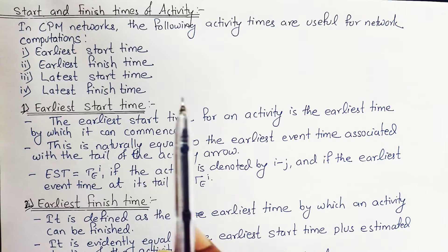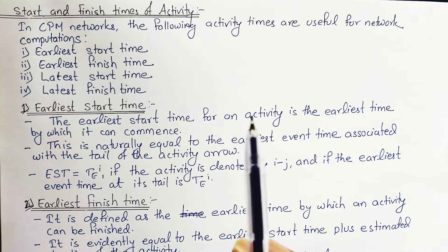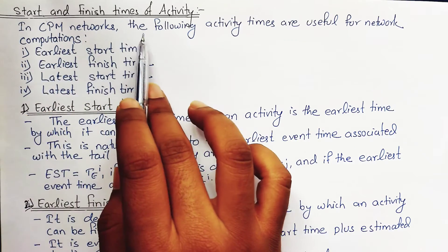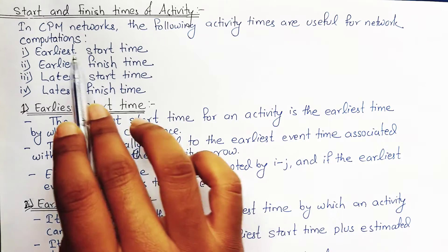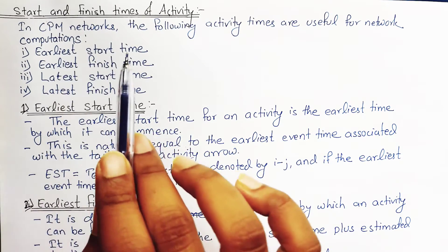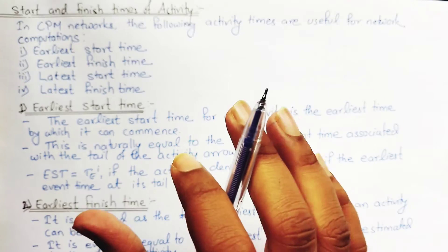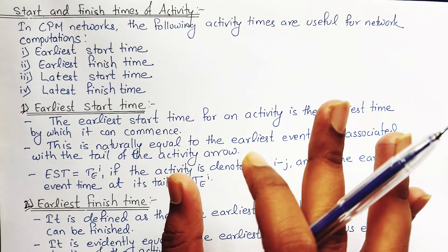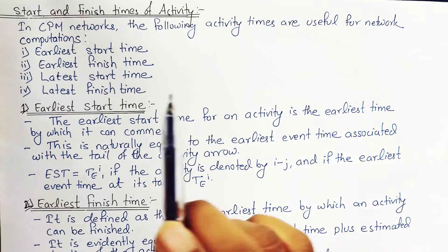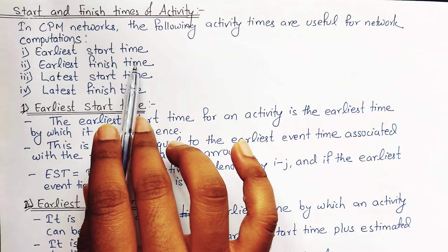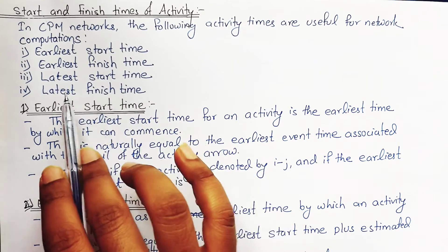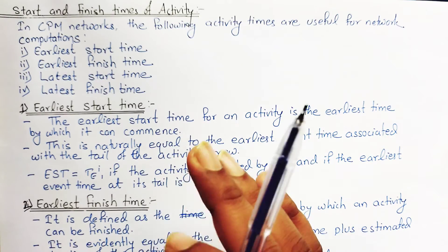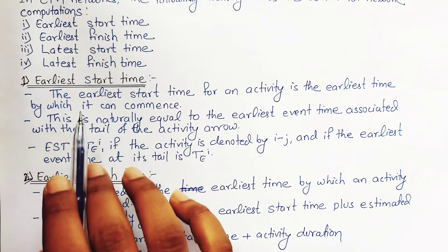One must always know about different start and finish times of activities, which are mainly used in CPM network computation. The four time estimates useful for CPM network computation are: Earliest Start Time (EST), Earliest Finish Time (EFT), Latest Start Time (LST), and Latest Finish Time (LFT). We will now learn about each of these in detail. The first is Earliest Start Time.